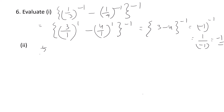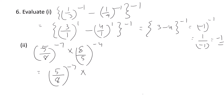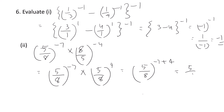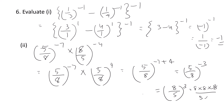The second question: (5 by 8) raised to minus 7 into (8 by 5) raised to minus 4. The powers and bases are different, so we convert the second term: (8 by 5) raised to minus 4 can be written as (5 by 8) raised to positive 4. Now the bases are the same, and using a raised to m into a raised to n equals a raised to m plus n, we get (5 by 8) raised to minus 7 plus 4, which is (5 by 8) raised to minus 3. Making it positive: (8 by 5) cubed, which is 512 by 125.